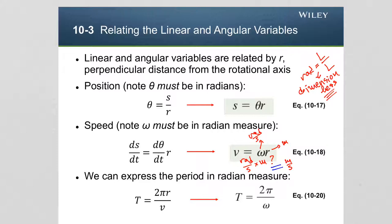The period of rotation T was previously calculated as 2πr divided by the linear velocity v. Using the relationship between linear velocity and angular velocity, we can rewrite the period as 2π divided by the angular velocity ω. This still has units of seconds, but now the calculation is expressed in terms of angular velocity in radians per second.